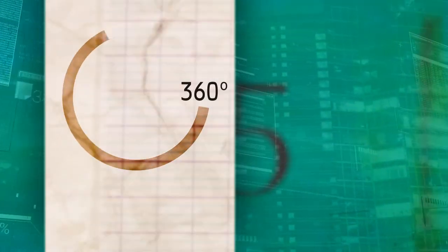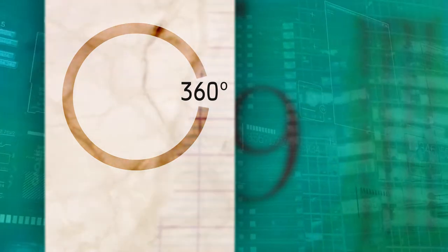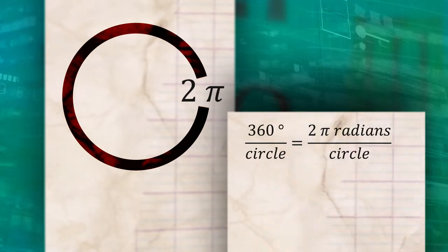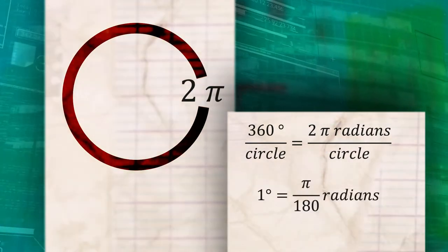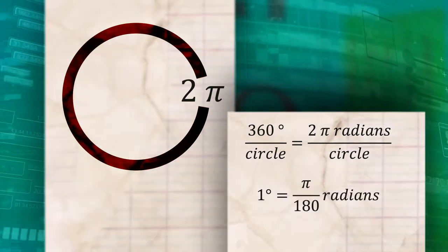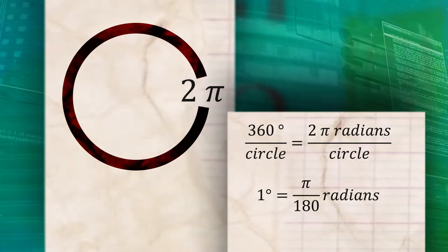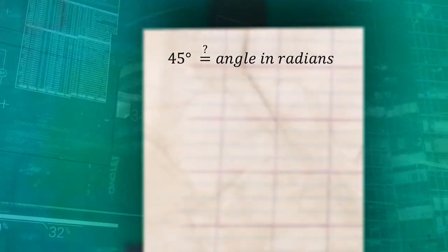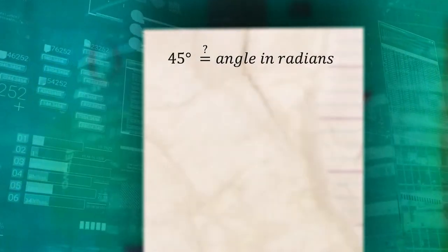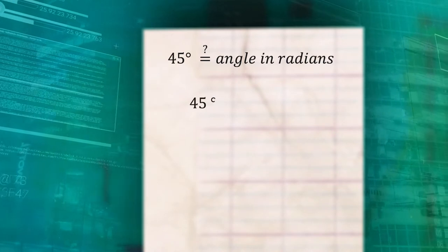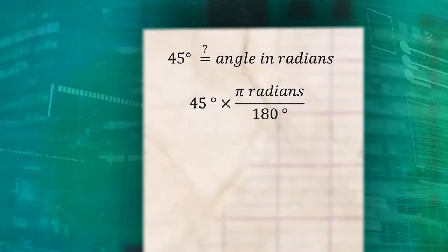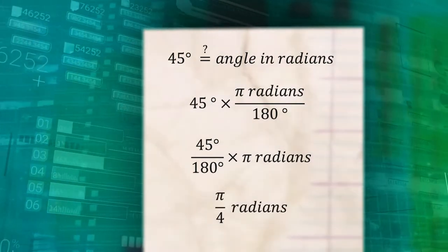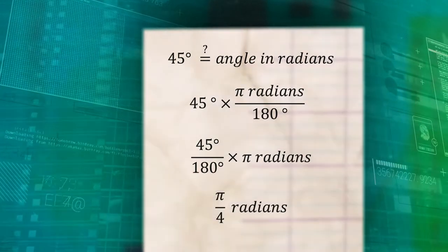You may already know that there are 360 degrees in a circle. There are also two pi radians in a circle as well. Just like we had a conversion factor for meters to feet, we can use these data points to get a conversion factor for radians. So if we have a 45 degree angle, we can convert that to radians by dividing by 180 and multiplying by pi. In this case, we get pi over 4 radians, which is the same as 45 degrees.